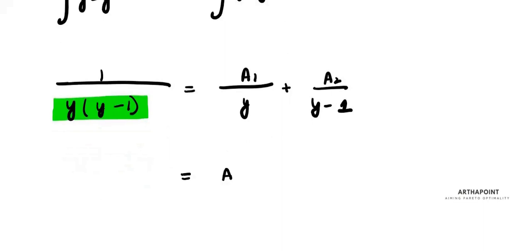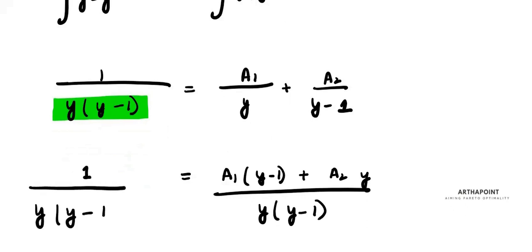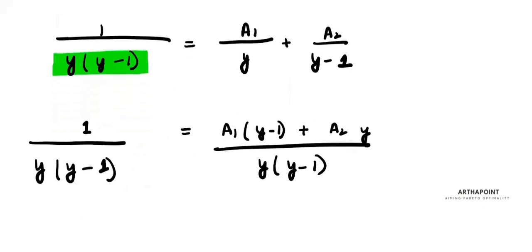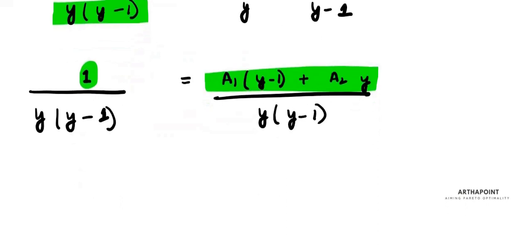So 1/(y(y-1)) = [A1(y-1) + A2·y] / [y(y-1)]. The denominators are the same, so the numerators must be equal: A1(y-1) + A2·y = 1.